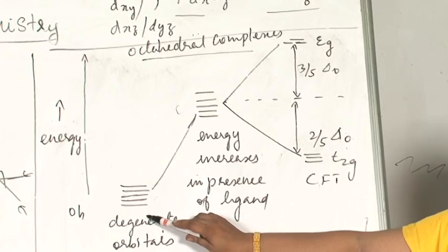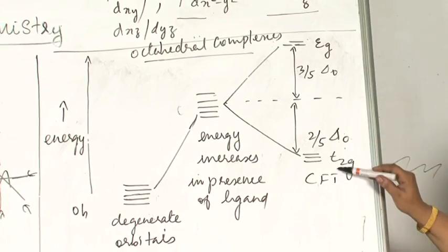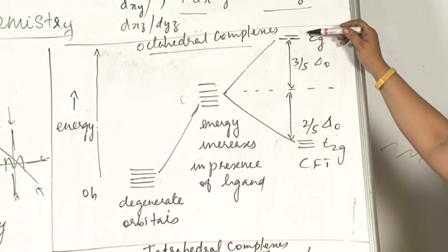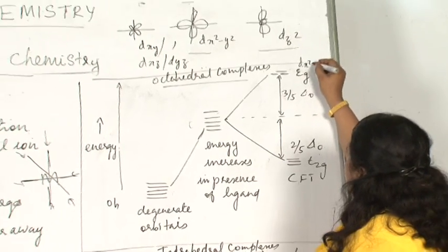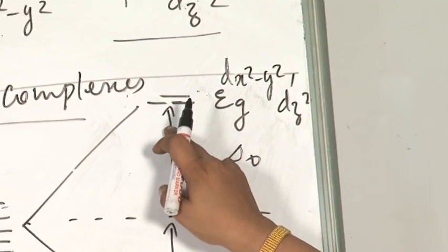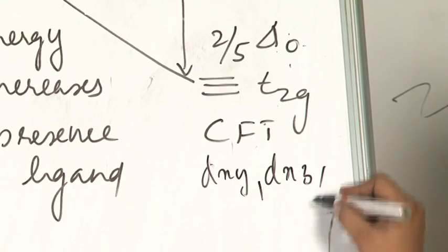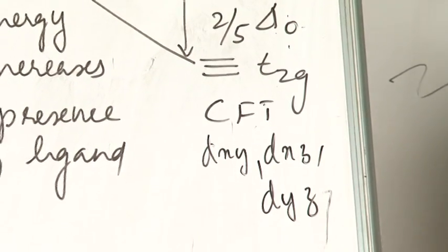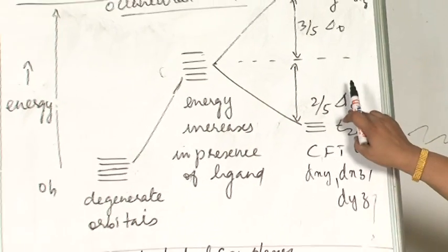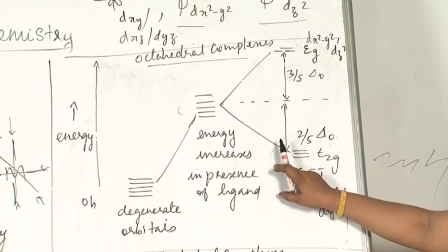The 5 d orbitals' energy is split into t2g - 3 lower energy orbitals - and the higher energy orbitals d x² minus y² and d z² are called eg orbitals. These 3 orbitals d xy, d xz, and d yz are called t2g orbitals which have lower energy. This Δo denotes octahedral splitting. This is a sure short question in your examination.